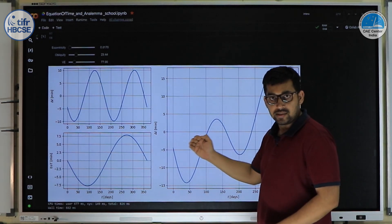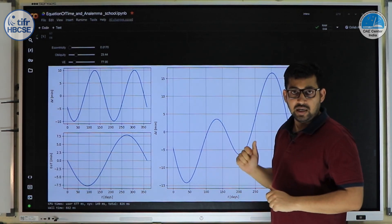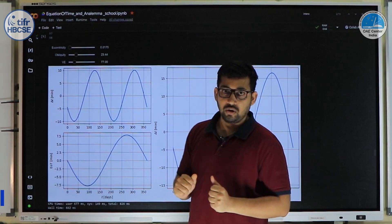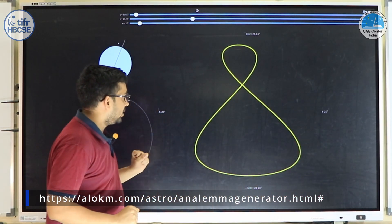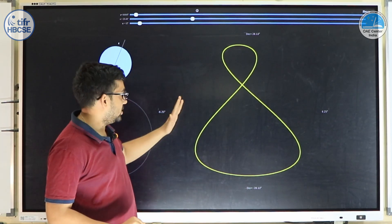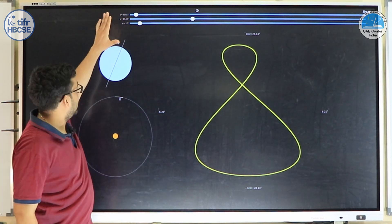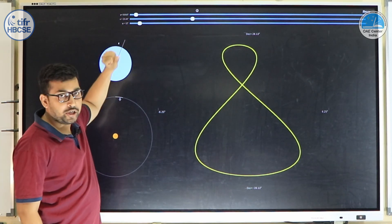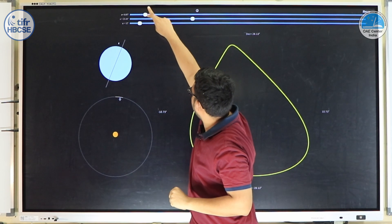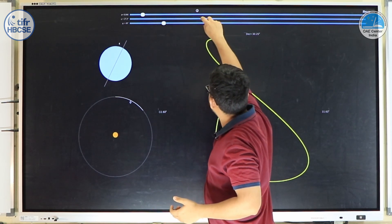The equation of time tells us how much the Sun lags behind or leads compared to the Mean Sun, governing the lateral movement in the analemma. The vertical movement is governed by the declination of the Sun, which is due to the axial inclination. Given both of these combined, we can now draw the analemma. This analemma generator allows you to play around with the parameters — adjusting the eccentricity and obliquity sliders shows how the figure changes from a figure-8 to an egg or elliptical shape.